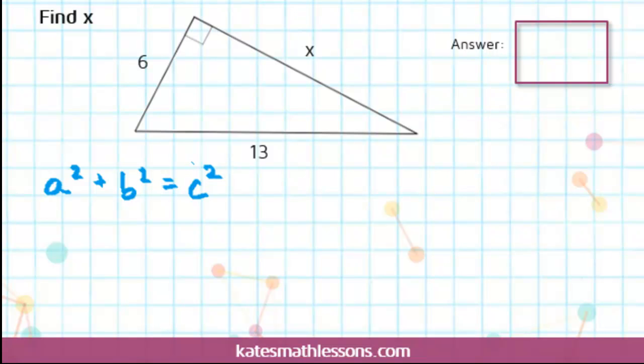C is the hypotenuse, and the hypotenuse is always across from the 90 degree angle. So if you find this little box that marks the 90 degrees, always go across the triangle, and that value is C.